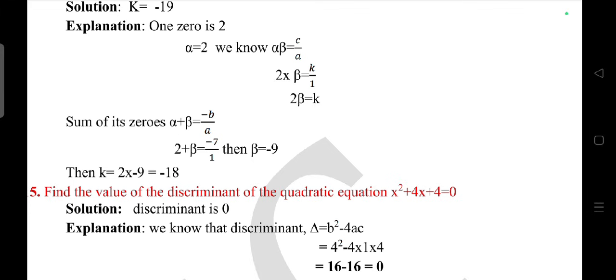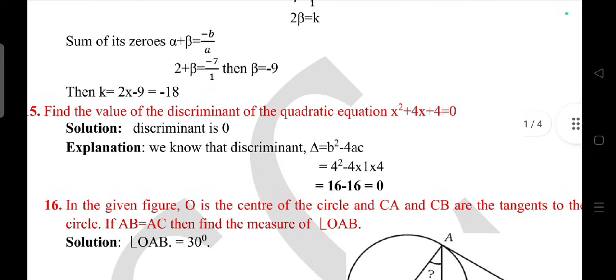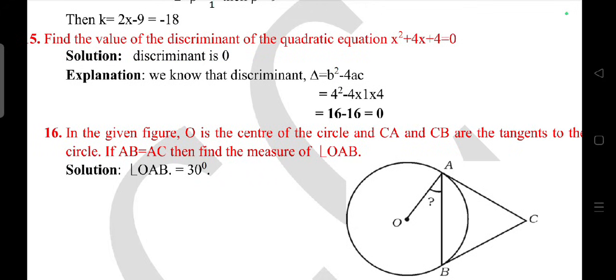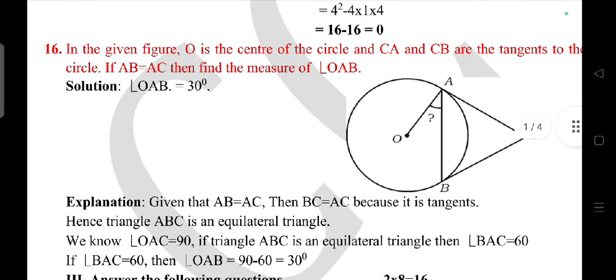Sum of zeros is minus b by a: 2 plus beta equals minus 7, then beta equals minus 9, so k equals 2 into minus 9, you will get minus 18. Find the value of discriminant of the quadratic equation x square plus 4x plus 4 equals 0, answer is 0.